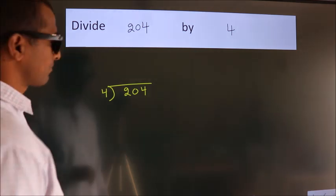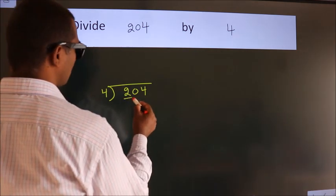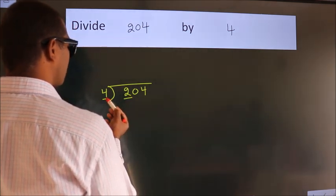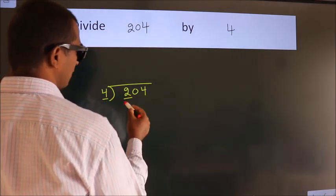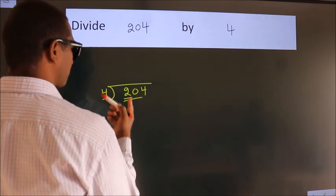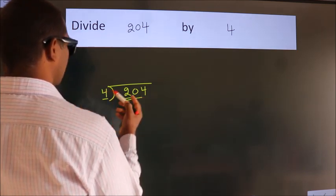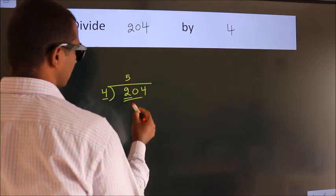Next. Here we have 2. Here 4. 2 is smaller than 4, so we should take 2 numbers: 20. When do we get 20? In the 4 table. 4 times 5 is 20.